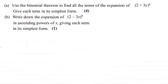Hi there. Now in this question we've got to use the binomial theorem to find all the terms of the expansion of 2 plus 3x all raised to the power 4, giving each term in its simplest form for 4 marks.